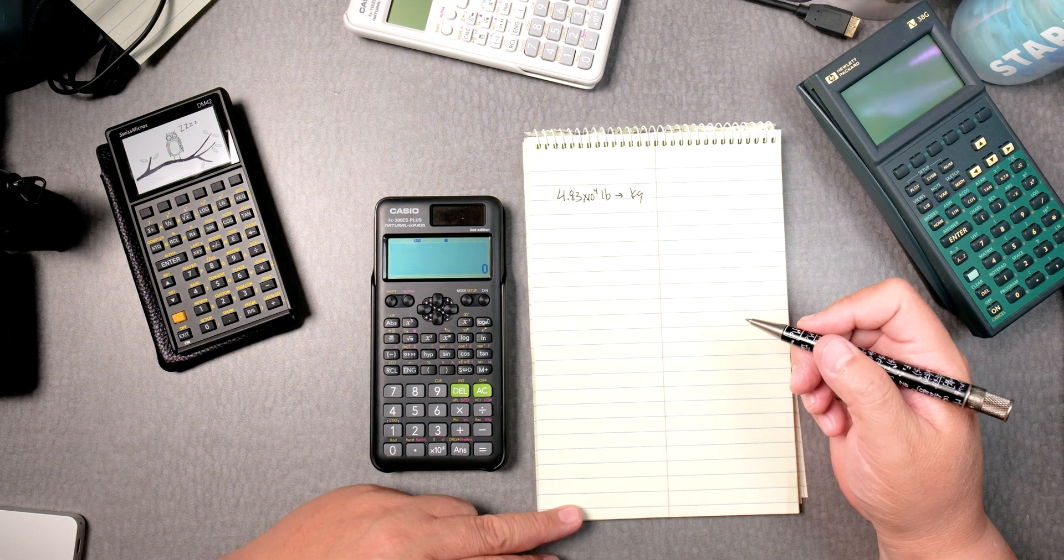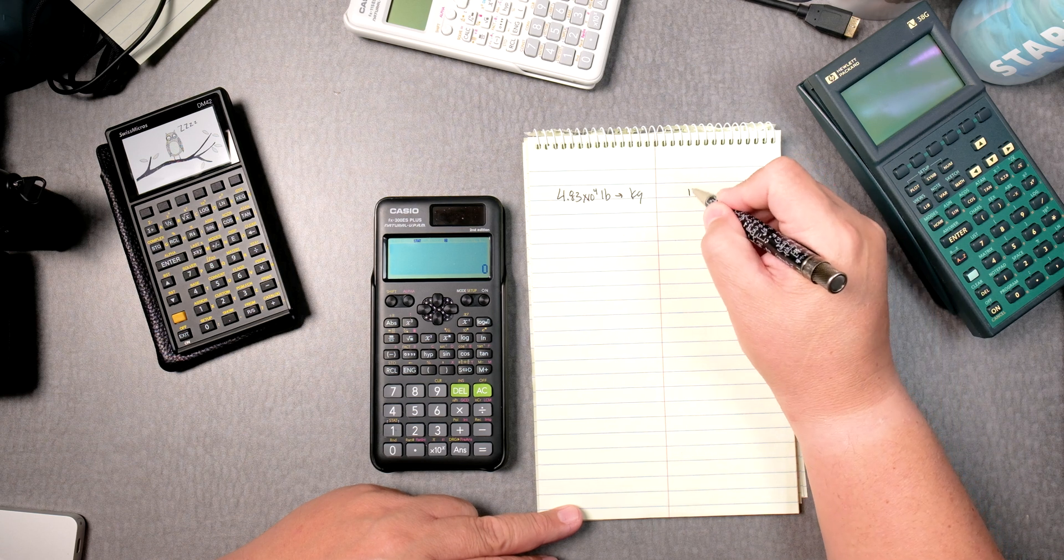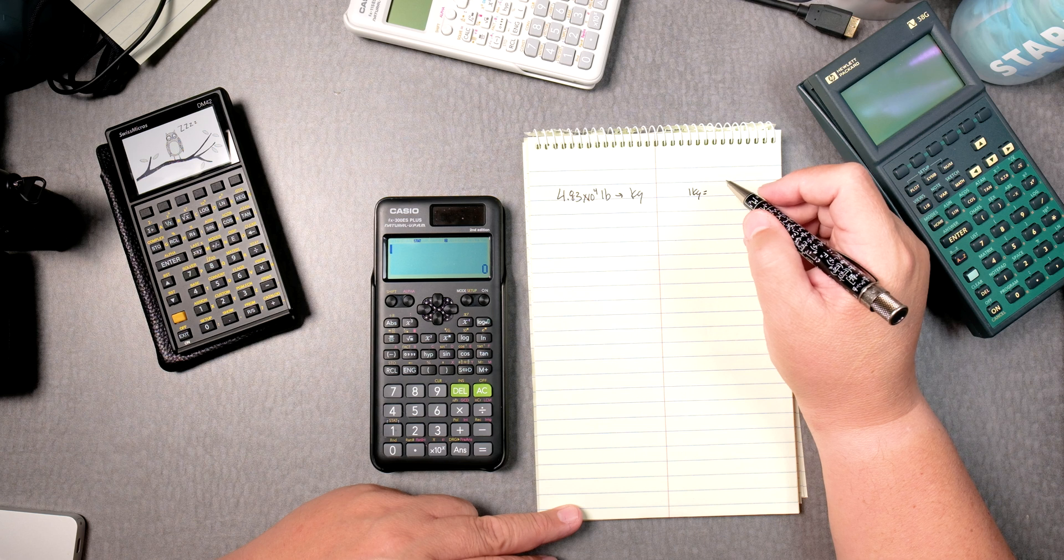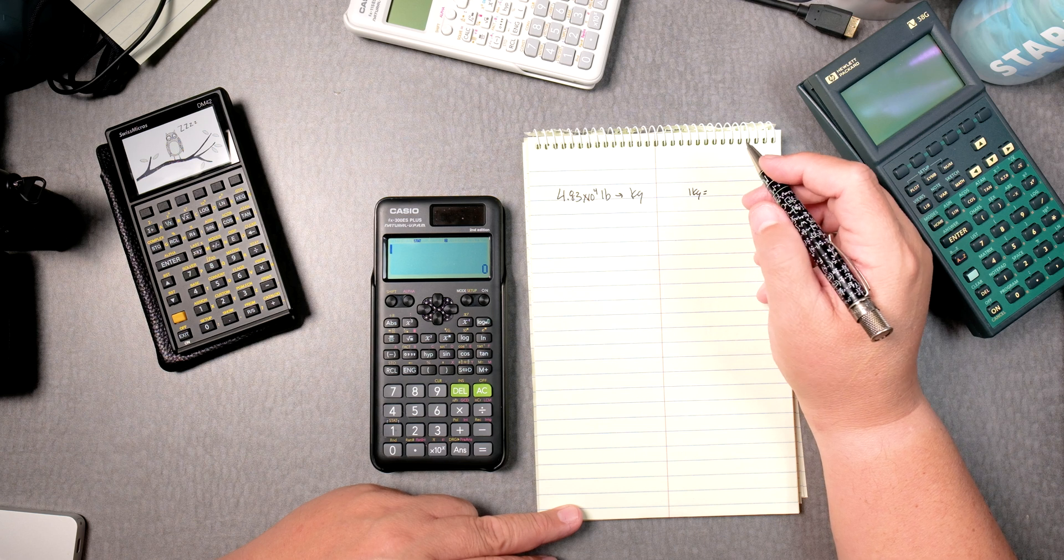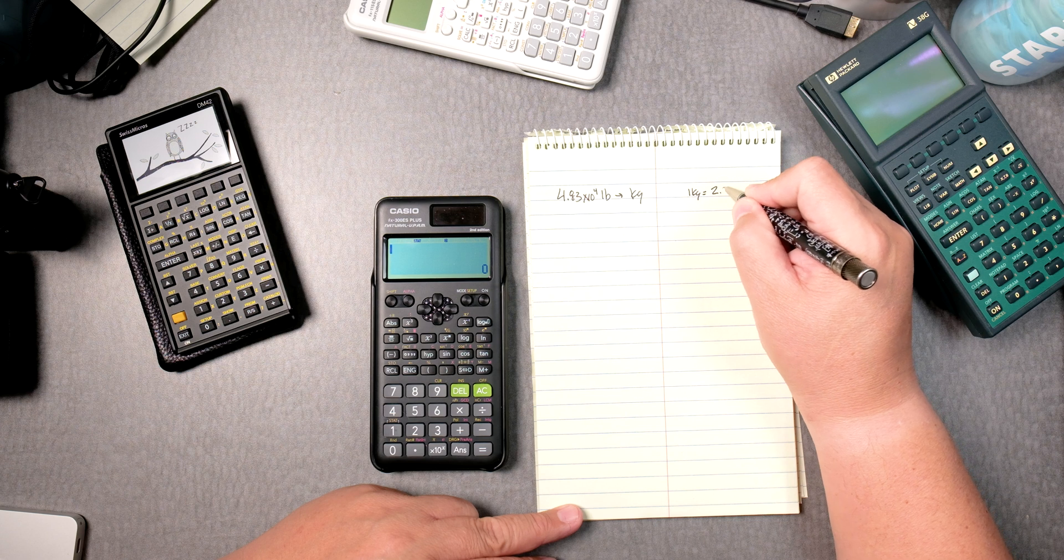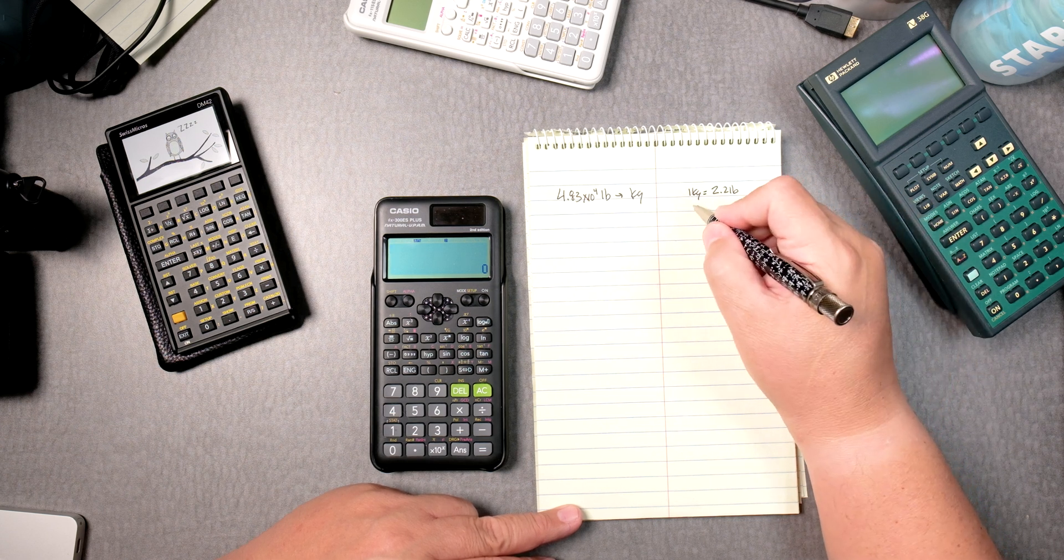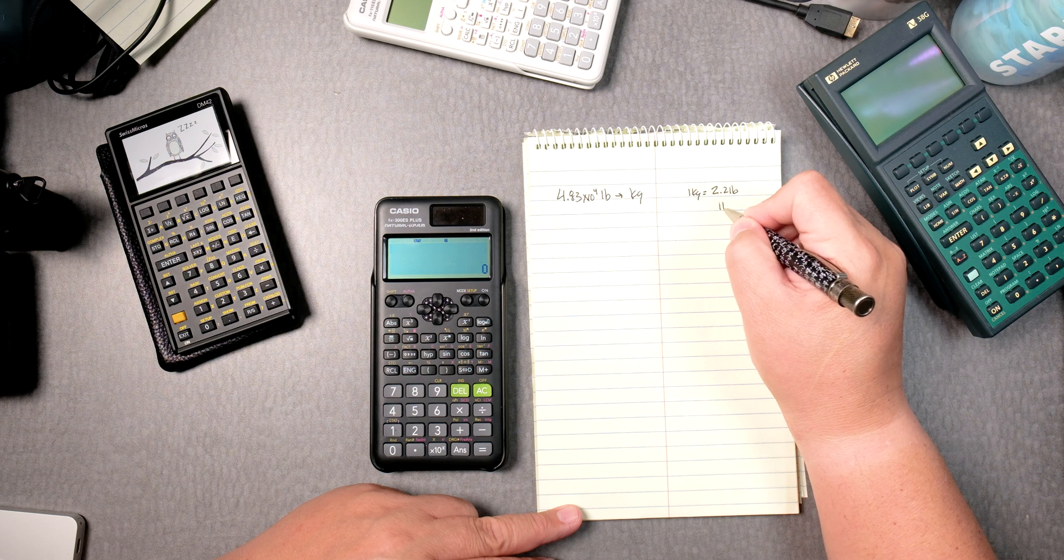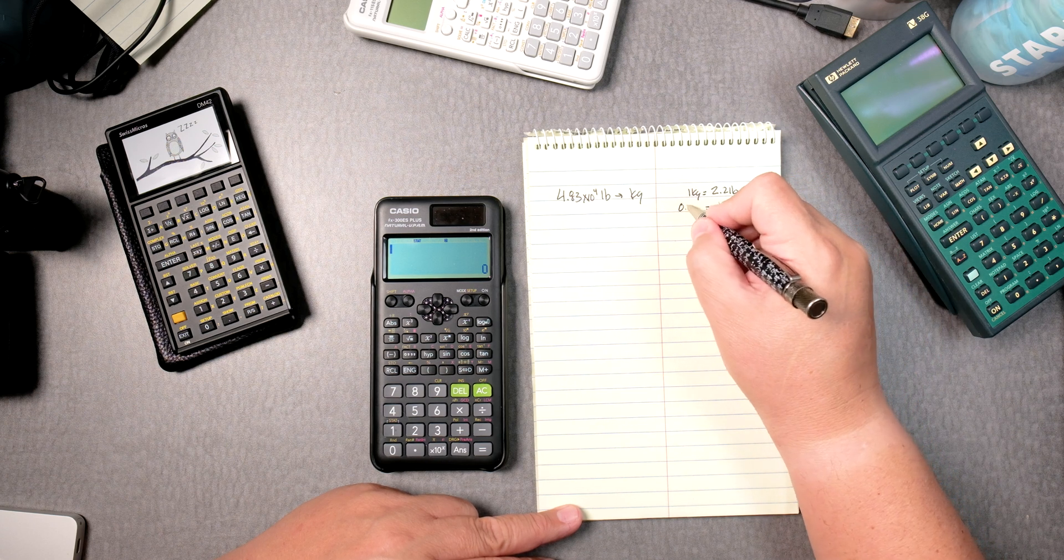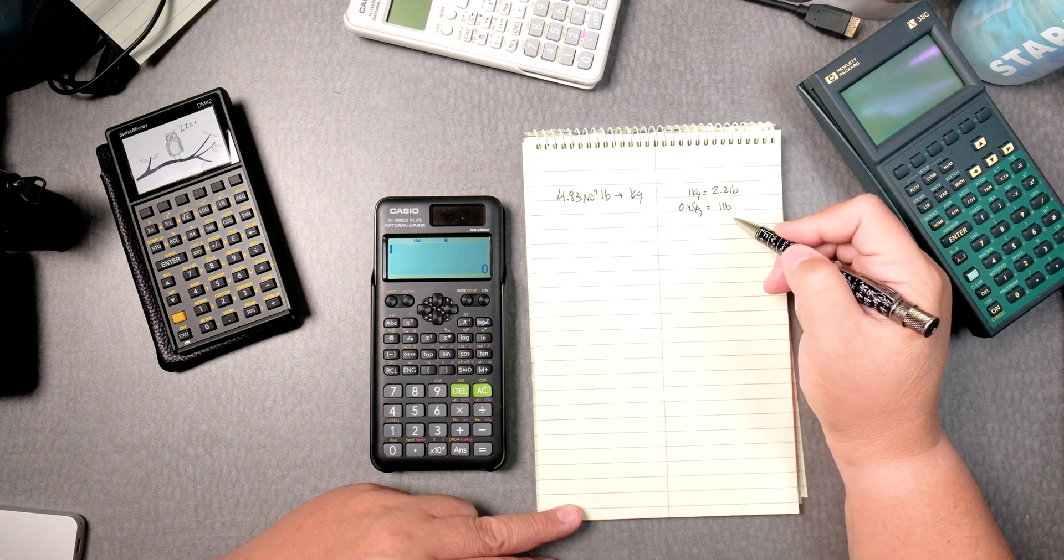The first thing is we need some type of unit conversion. For example, 1 kilogram is equal to 2.2 pounds. But we can also say that 1 pound is equal to 0.45 kilograms. These two are equivalent.